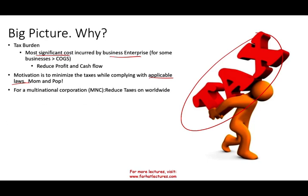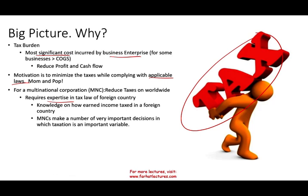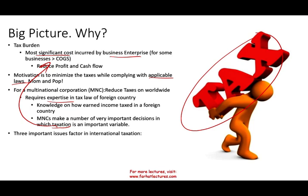But for a multinational corporation, they can reduce taxes on their worldwide income as long as they know the rules in different countries — which requires expertise and knowledge of how earned income is taxed in each country. If you're making a profit in country A paying 20%, and you could move to country B and pay only 10%, you might think about it. The three most important issues in international taxation are location, legal form, and financing.